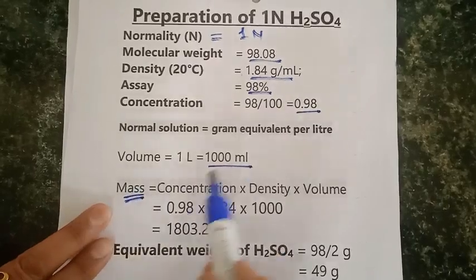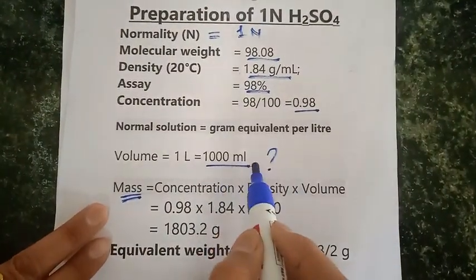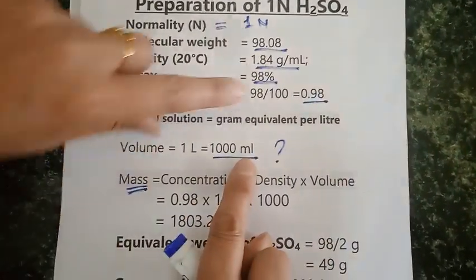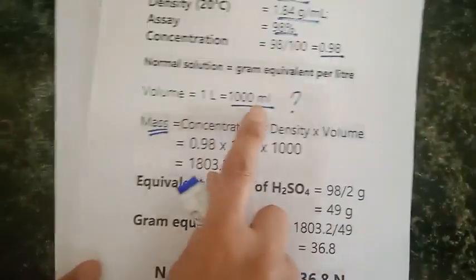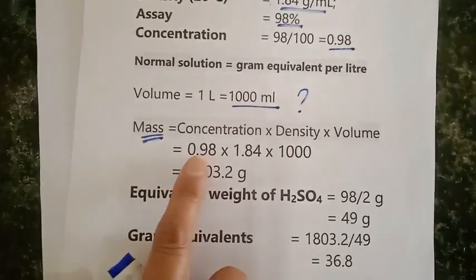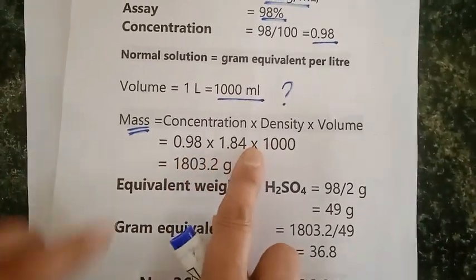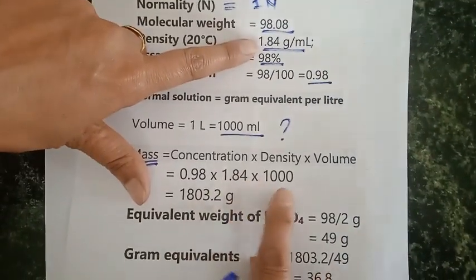I am just going to prepare a normal solution, so for that purpose gram equivalent per liter, and per liter means 1000 ml. Here I am calculating the weight. I need to multiply the SA converted into concentration times its density times volume.